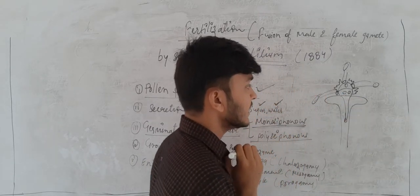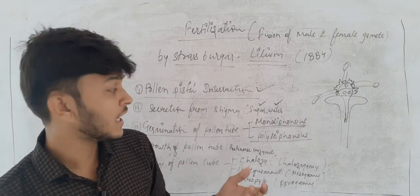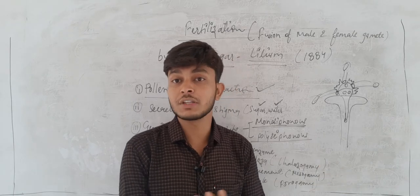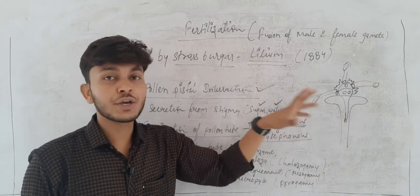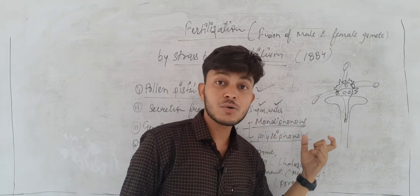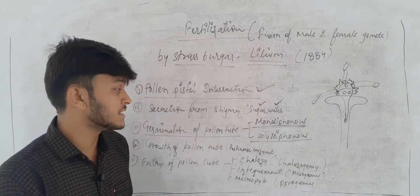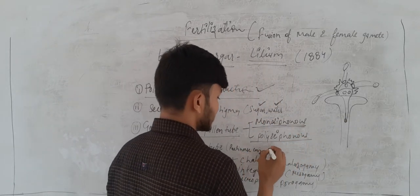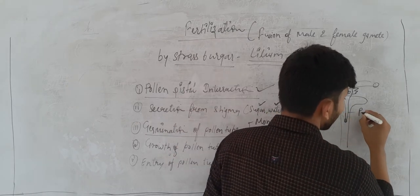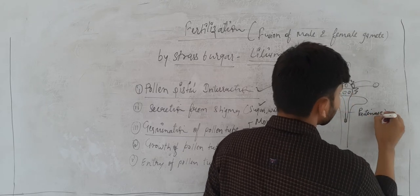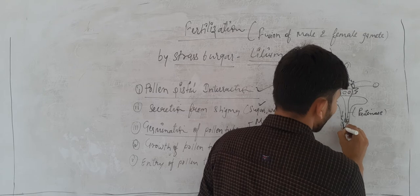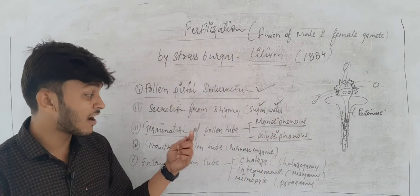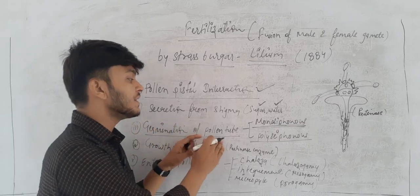The pollen tube travels through the style. The style can be hollow or solid. If the style is hollow, there is no problem and the pollen tube goes down easily toward the ovule. But if the style is solid, the pollen tube secretes an enzyme called pectinase. Because of pectinase, the pollen tube continuously digests its way and reaches the ovule.